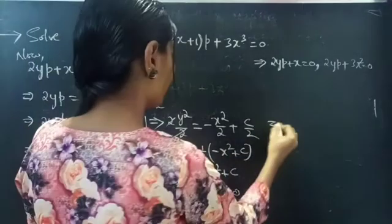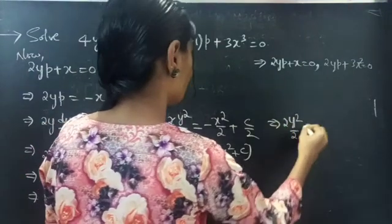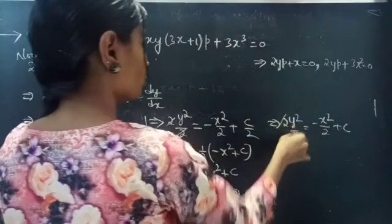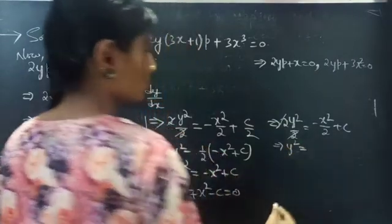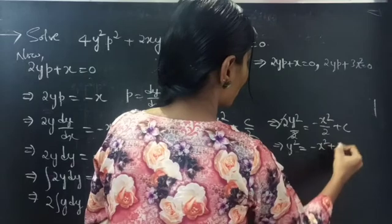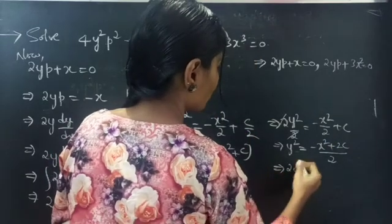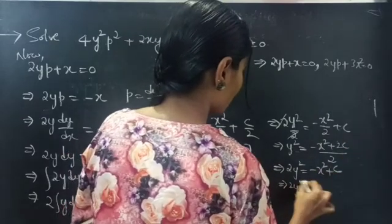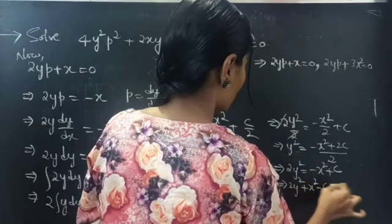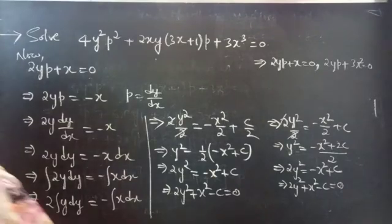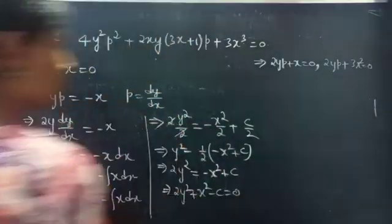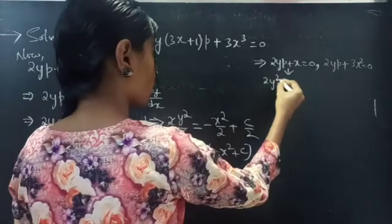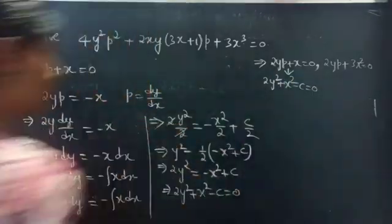If we take c, the 2 gets cancelled and y² = −x² + 2c/2. We can write 2c as c, giving y² = −x² + c. Then, 2y² + x² − c = 0. So the solution for the first factor is 2y² + x² − c = 0.